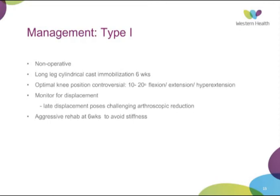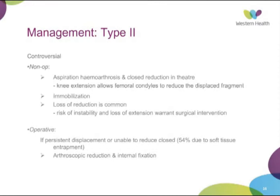Type 2 fractures have some controversy in the literature. Most are managed non-operatively, at least initially — taken to theatre for aspiration of the haemarthrosis and closed reduction by extending the knee, allowing the femoral condyles to reduce the fragment. These are immobilised in a cylindrical cast or hinged knee brace locked. However, loss of reduction is common in about 50%, increasing the risk of instability and loss of full extension, which warrants surgical intervention.